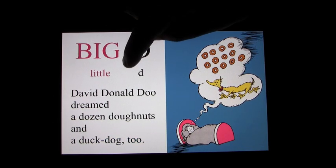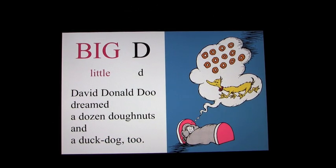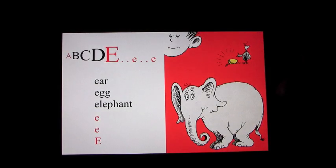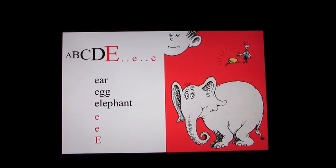And that's really what it's all about: Dr. Seuss, Ocean House Media, and ABCs. A, B, C, D, E, ear, egg, elephant. Really, really well done, and a great book.